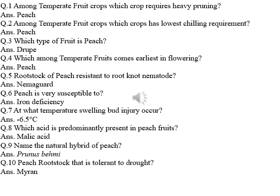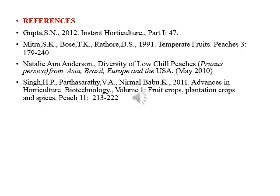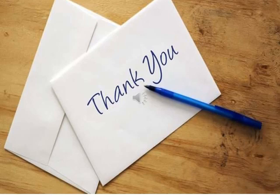Here are some important questions regarding peach. Among temperate fruits, which crop requires heavy pruning? That's peach. Which crop has the lowest chilling requirement? That's peach. Which type of fruit is peach? That's a true fruit. Which among temperate fruits comes earliest in flowering? That's peach. The rootstock of peach resistant to root-knot nematode is Nemagard. Peach is very susceptible to iron deficiency. At what temperature does swelling bud injury occur? That's minus 6.5 degrees centigrade. Which acid is predominantly present in peach roots? That's malic acid. The natural hybrid of peach is Prunus bumi. The peach rootstock most tolerant to drought is Myran. Here are the references of my presentation. Thank you so much and have a nice time ahead.